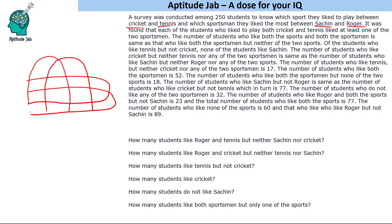Let us make these regions. This is cricket, this is tennis, this is Sachin, and this is Roger. We know that there are 250 students in total.